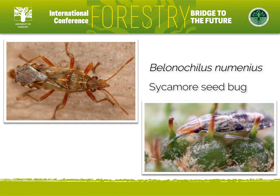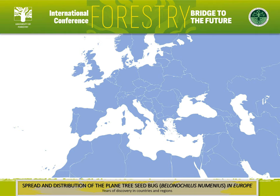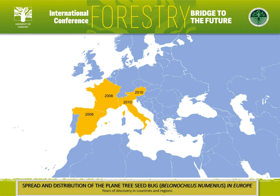The sycamore seed bug, Belonochilus numenius, spends most of its life cycle feeding on seed balls. The adults reach sizes of about 6 to 8 mm in length. Like the lace bug, it originates from North America and was first reported in Europe in France in 2008 on two locations — the mainland and Corsica — and in Catalonia, Spain in the same year. However, it was later reported that the first find was actually on the island of Mallorca, earlier in 2008.